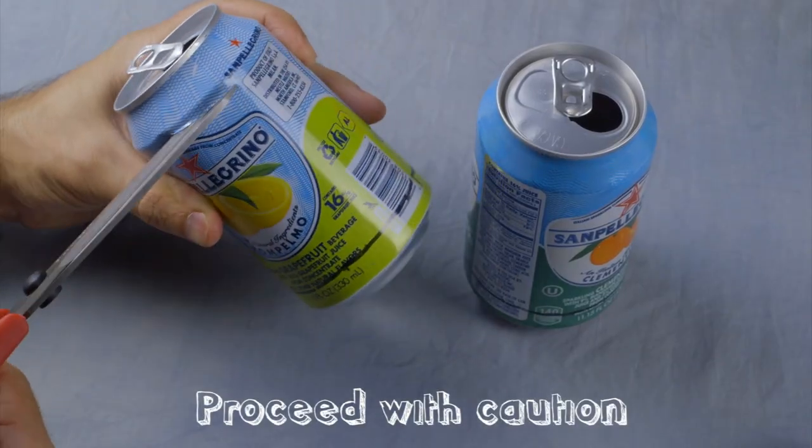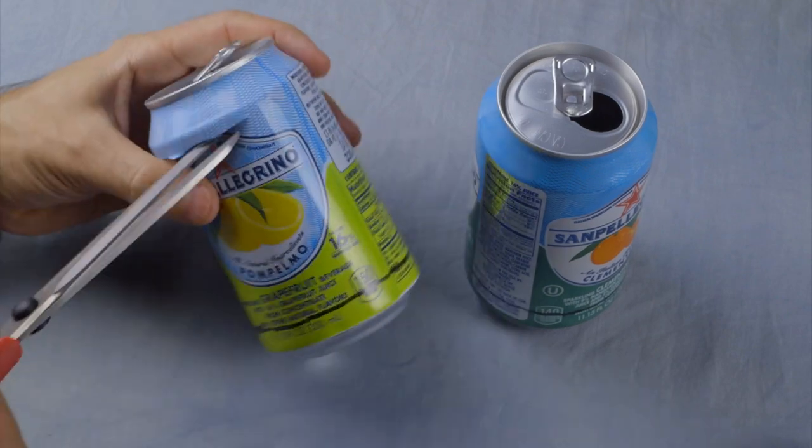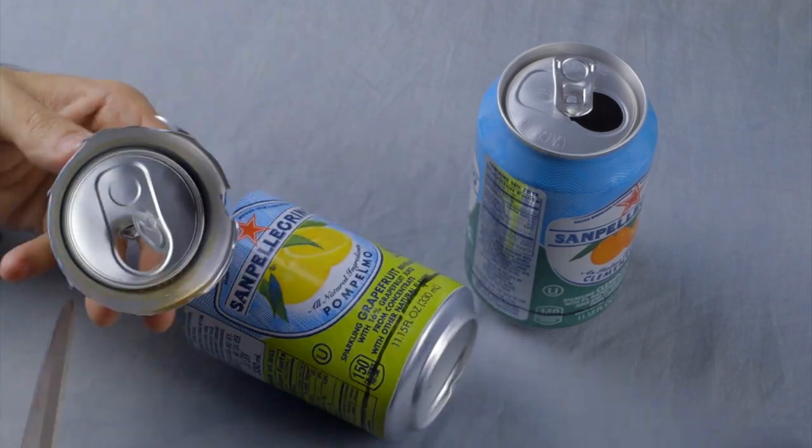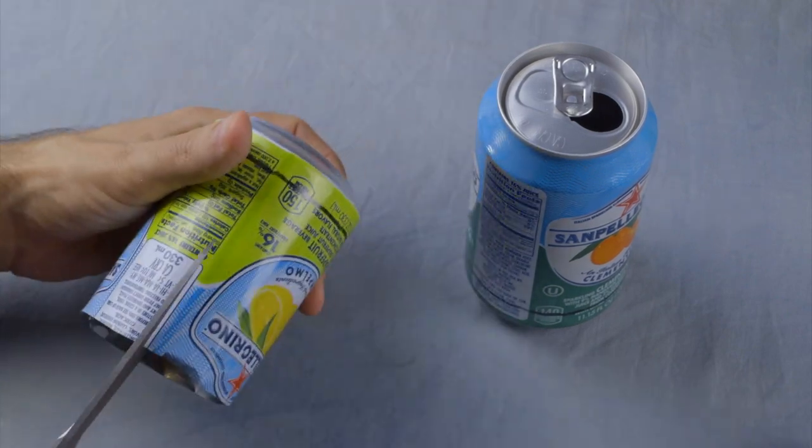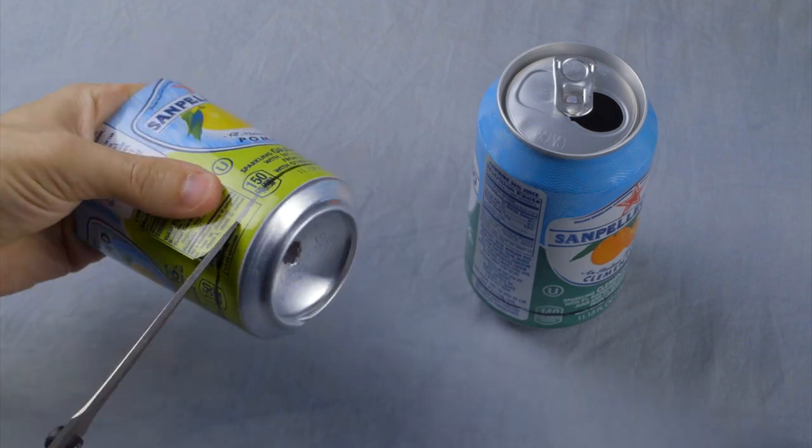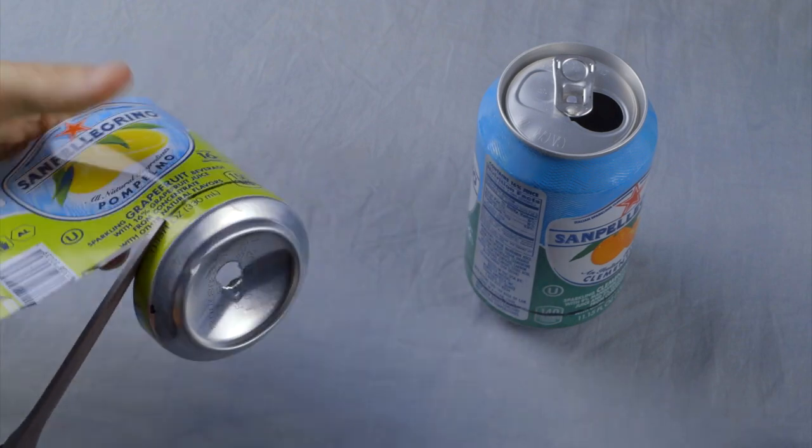Use your scissors to cut the top off each can. Be very careful not to cut yourself on the sharp metal edges. Continue down the side and along the line that you drew earlier.